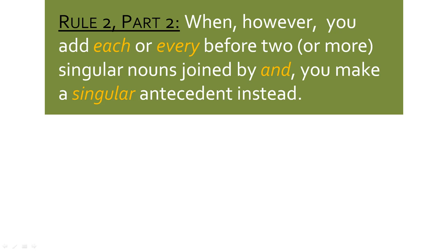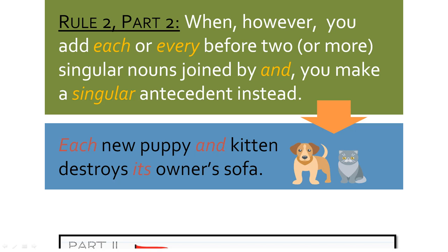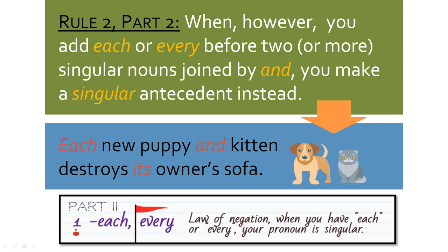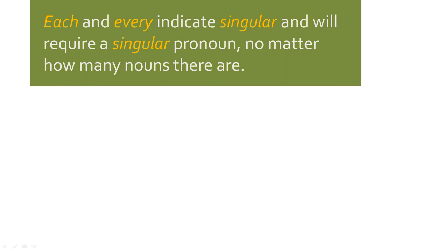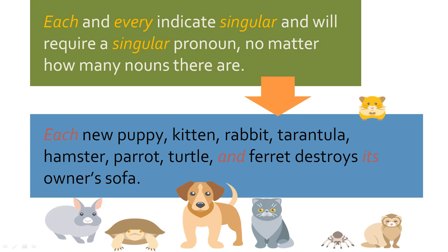Rule number two, part two: remember that 'each' and 'every,' when they precede singular nouns joined by 'and,' give you a singular antecedent instead. 'Each new puppy and kitten destroys its owner's sofa.' This is just like with subject-verb agreement. When 'each' or 'every' precedes, it doesn't matter how many things you add — you've got a singular pronoun. For example: 'Each new puppy, kitten, rabbit, tarantula, hamster, parrot, turtle, and ferret destroys its...' — singular pronoun, because each and every require that.